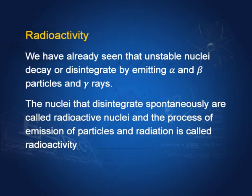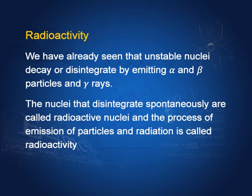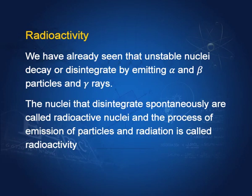Now let us take up the topic of radioactivity. Those nuclei which are unstable decay spontaneously, and their decay products are more stable than the original nucleus. They emit mostly alpha, beta, and gamma radiation. They can also emit other particles like positrons, protons, and neutrons, but alpha, beta, and gamma are the most frequent and therefore the most well known.